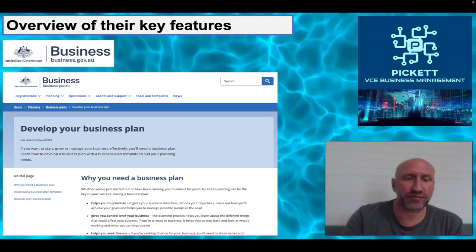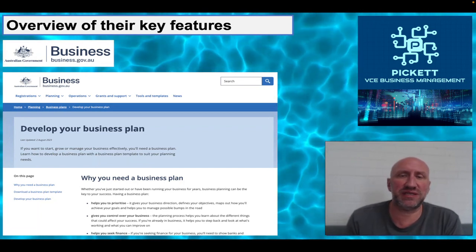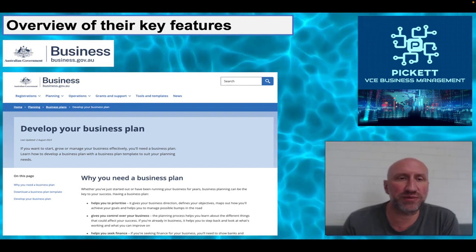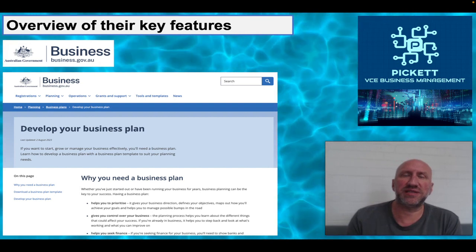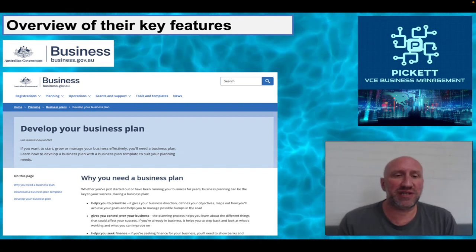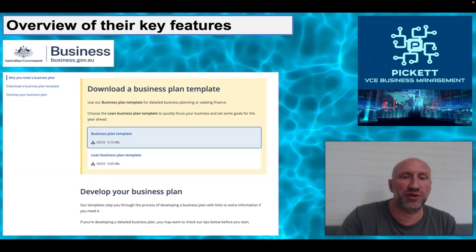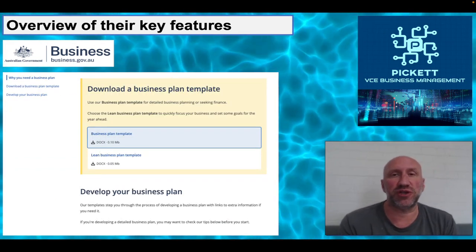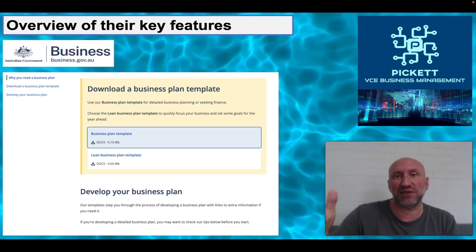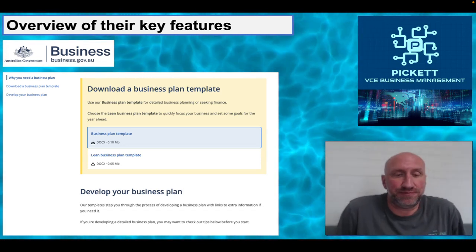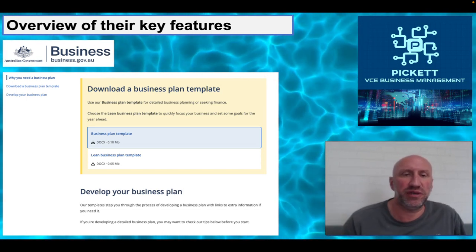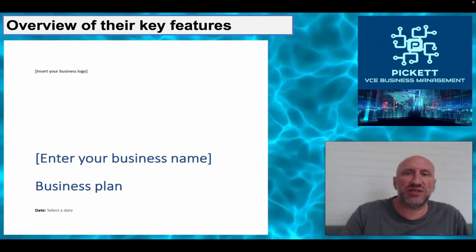So for an overview of the key features — the great thing about the internet is there are lots of resources we can easily access. One of them is the federal government website, business.gov.au, which has tons of resources for new and existing business owners. It includes pro forma business plan templates you can download. Using these templates means you'll tick all the boxes you need to tick. There's a standard business plan template and a lean business plan template, which is a slightly briefer version.